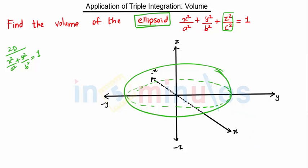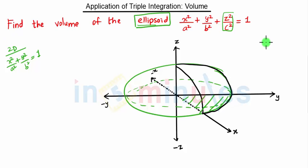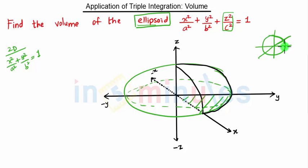To find the volume, we are going to consider only the first octant — that is the positive part of the x, y, and z axes. Just as we can cut a sphere into eight parts, we can cut this ellipsoid into eight parts and find the limits for only one part, then multiply by eight.